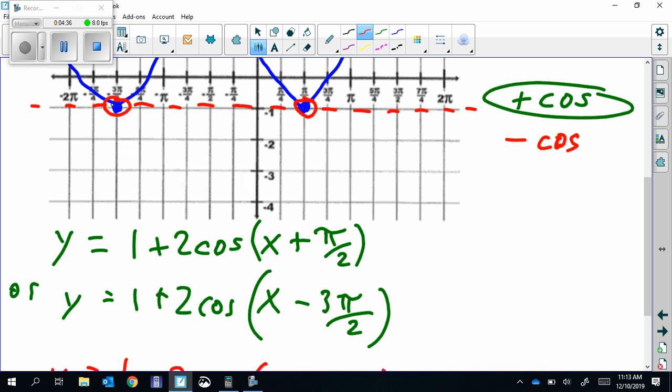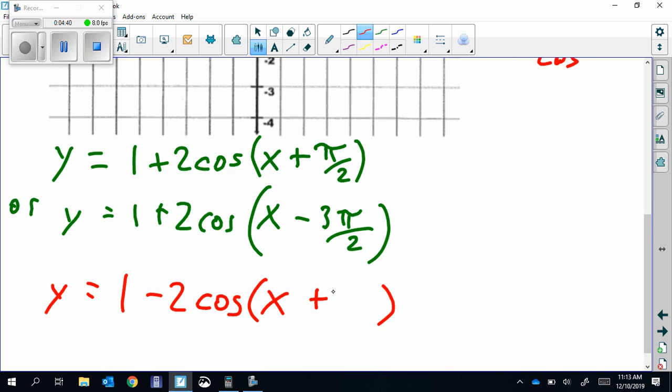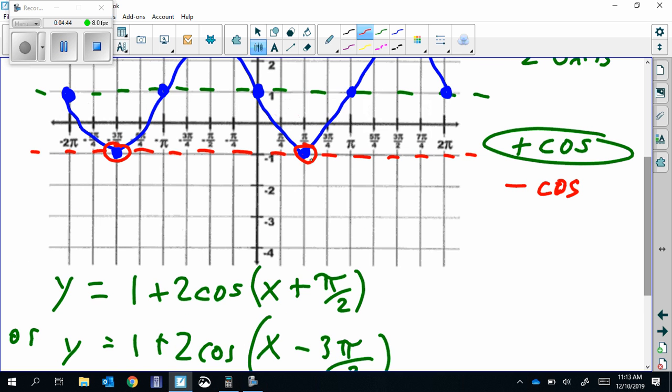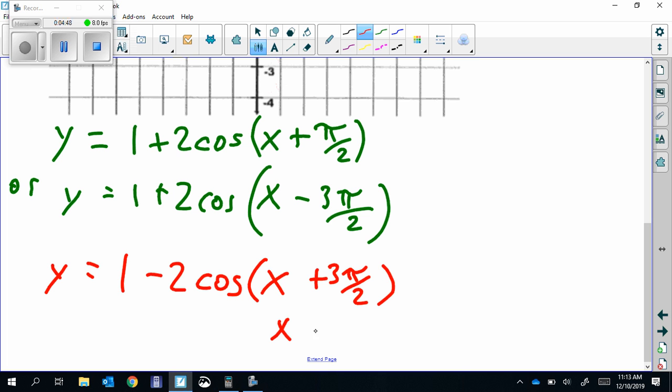If you chose this point, that's negative 3π over 2, so that's going to be plus 3π over 2. If you choose this point, that's to the right π over 2, so that's going to be minus π over 2.